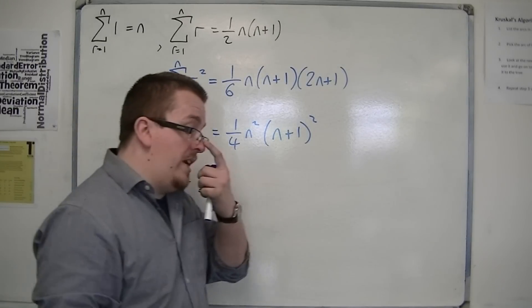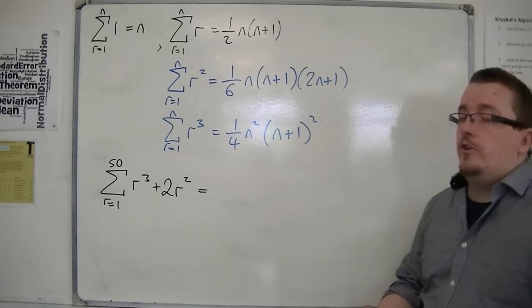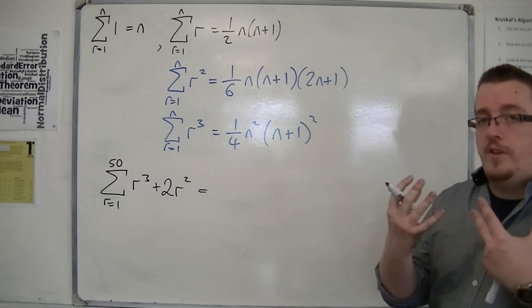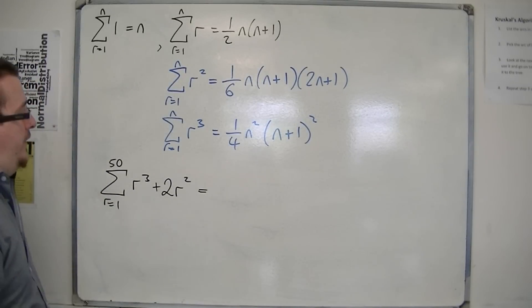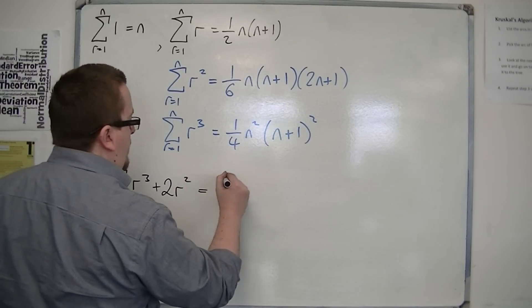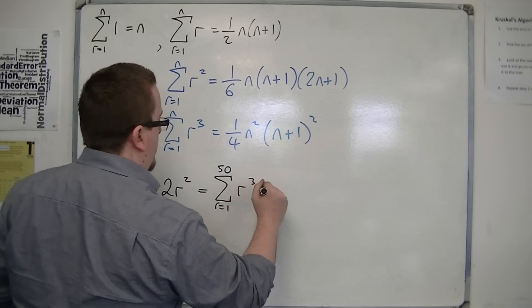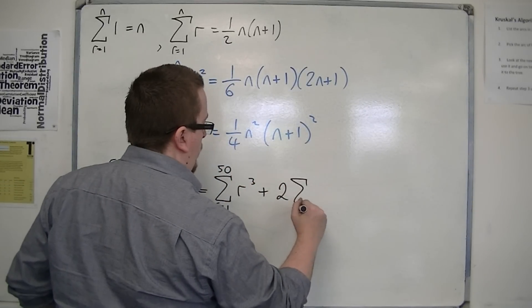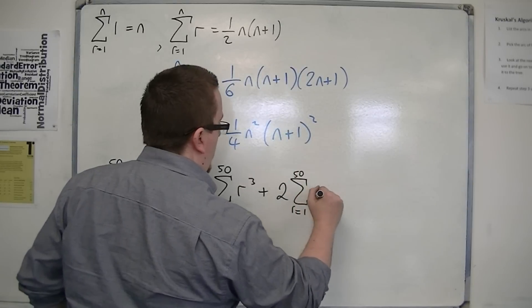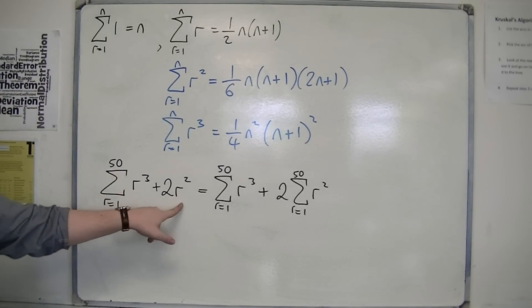So I showed you an example in the previous video where I showed you how you can split the sigma notation up. It works in all of these cases. So this is the sum from r is 1 to 50 of r cubed plus 2 lots of the sum of r is 1 to 50 of r squared. So you can see how this has been split up.